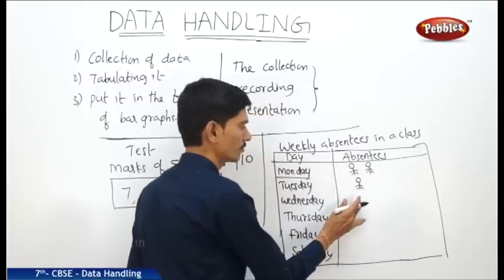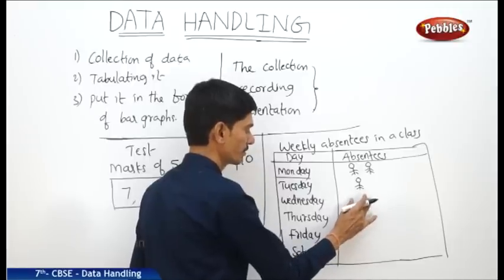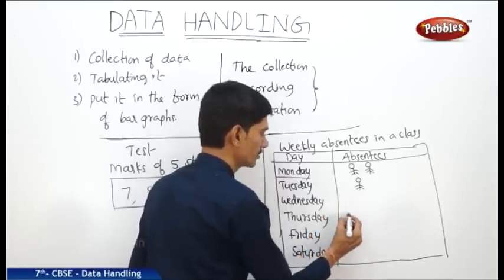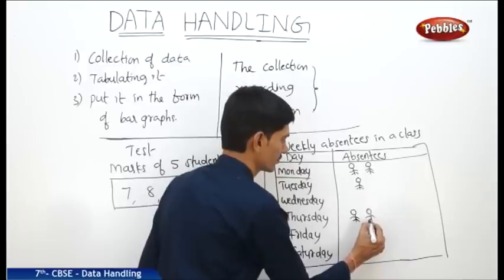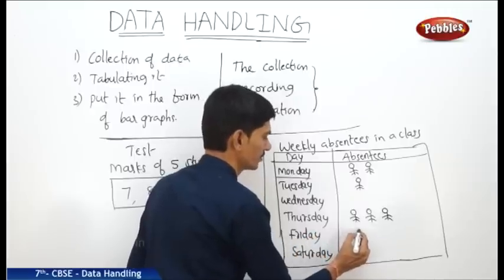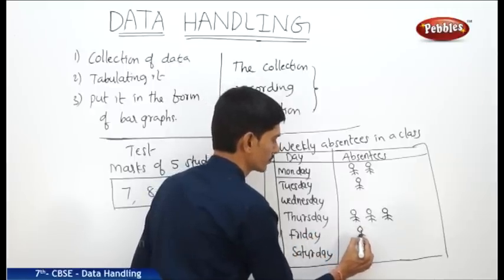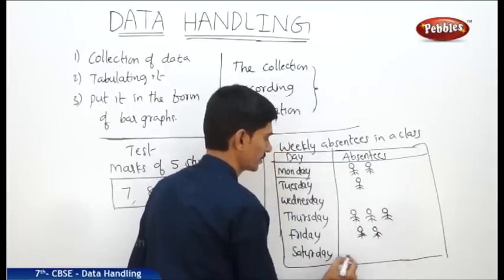And Wednesday, there are no students absent, so that is why we do not draw any student figures for Wednesday. And Thursday, so 3 students are absent. And Friday, so here also 2 students are absent on this particular day. And Saturday, so it is the end of the week.